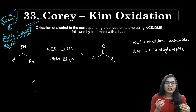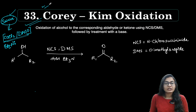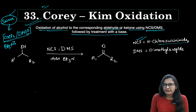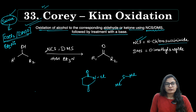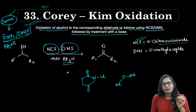The probability is very high that Corey-Kim oxidation will appear this time in your CSIR or GATE examination. The Corey-Kim oxidation is: oxidation of alcohols to the corresponding aldehyde or ketone using NCS (N-chlorosuccinimide) and DMS (dimethyl sulfide), followed by treatment with a base. These are very simple reagents, and in the second step you once again have triethylamine.